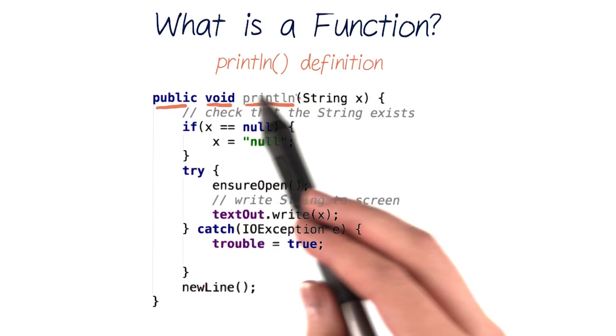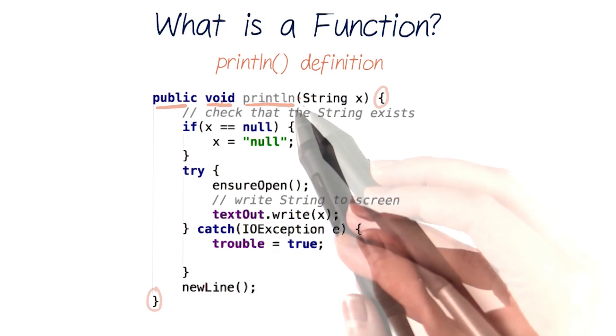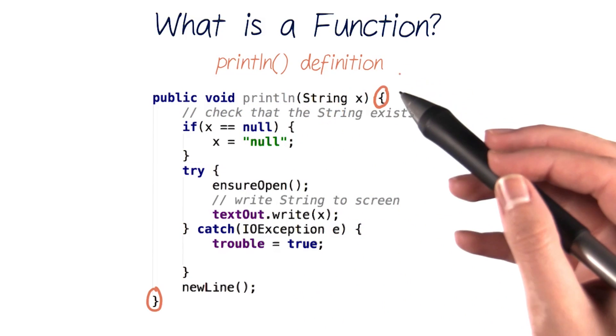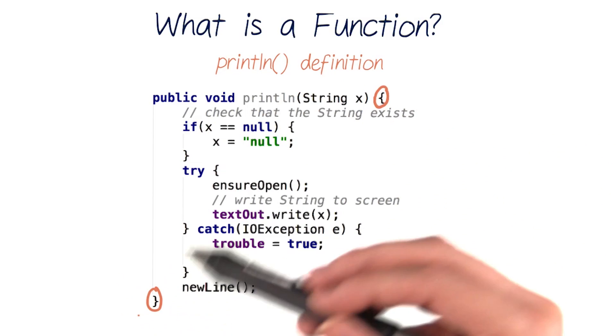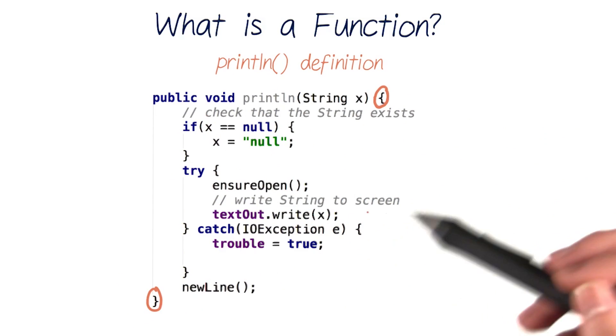Then the name of our function, println. Then it takes in a string which we input. And then it has curly braces that group together all the code that println executes.